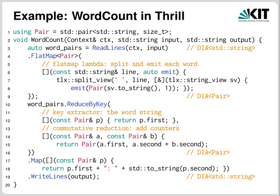This is what word count looks like in Thrill — just 20 lines of code excluding the main caller program. It contains lots of lambdas and dot chaining to compound the primitives together. Word count is composed of only five operations: ReadLines, FlatMap, ReduceByKey, Map and WriteLines.